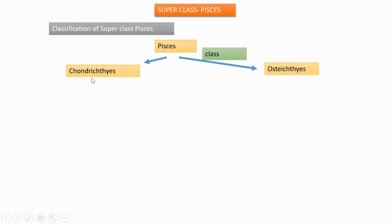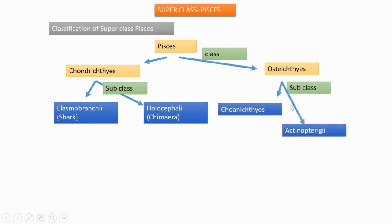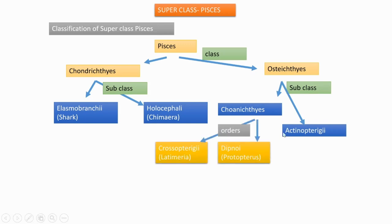Chondrichthyes is subdivided into two subclasses: Elasmobranchii and Holocephali. Under Elasmobranchii you will learn shark as the example, and for Holocephali you will learn Chimaera. Regarding Osteichthyes, the subclasses are Choanichthyes and Actinopterygii.